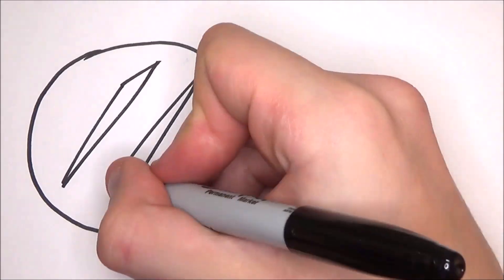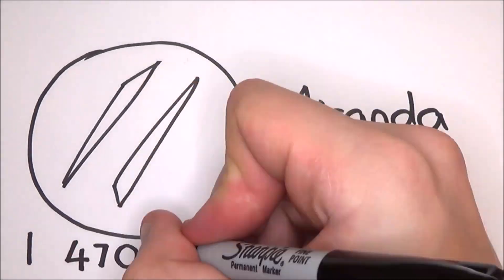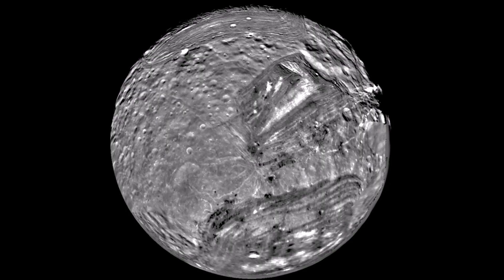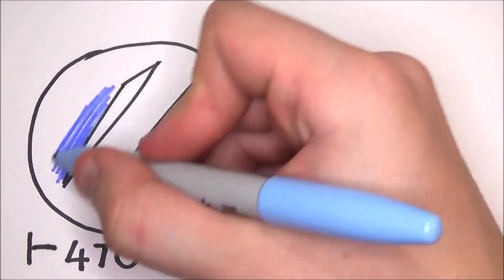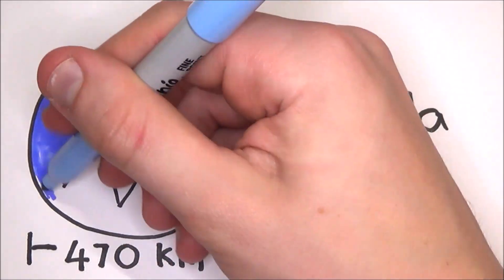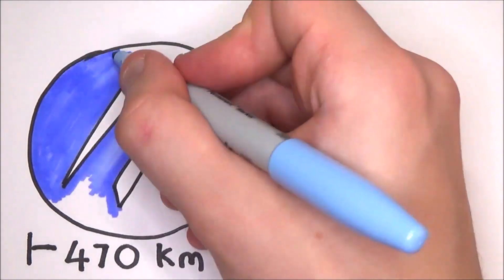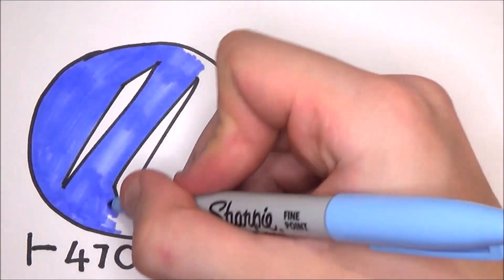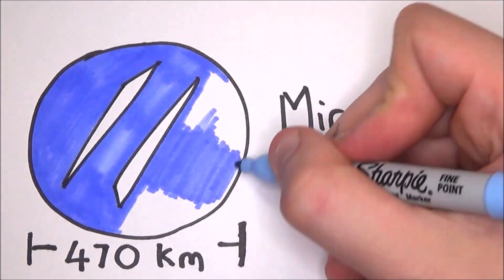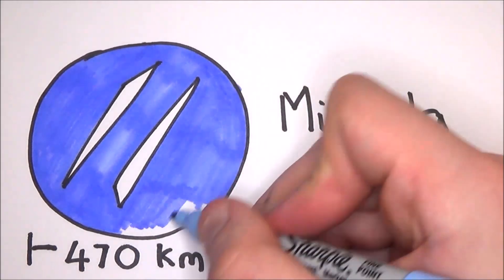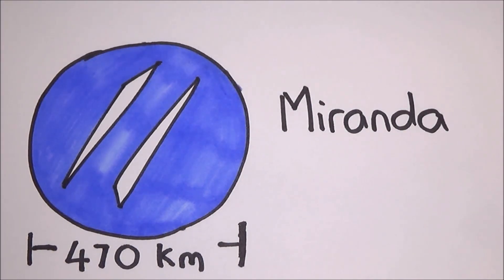The third fact is that Uranus' moon, Miranda, is the strangest moon I have ever seen. When you look at it, it's got huge gashes in the surface. It looks like it has been blown apart and then reformed. This is actually what they think has happened. It is one of the smallest objects in the solar system, at 470 km in diameter, to be spherical under its own gravity. Only Saturn's moon, Mimas, is smaller.